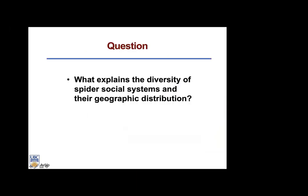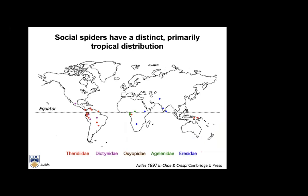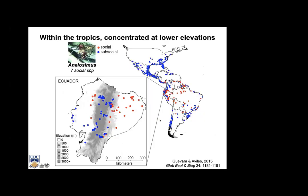A question we may ask is: what explains the diversity of spider social systems and their geographical distribution? Regarding geographical distribution, we have documented that social species are concentrated in the tropical areas of the world — here belonging to five families where social spiders have originated within the tropics. They are also concentrated at lower elevations, and in the genus Anelosimus they are concentrated in the lower-elevation wet tropics.